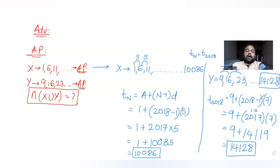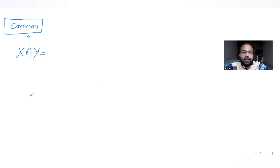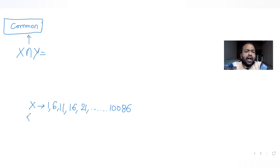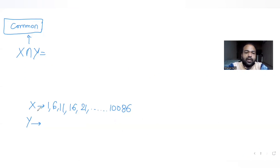Now let's try to find X intersection Y — the common elements in both sets. Set X is 1, 6, 11, 16, 21, ... up to 10,086. Set Y is 9, 16, 23, 30, 37, ... up to 14,128.